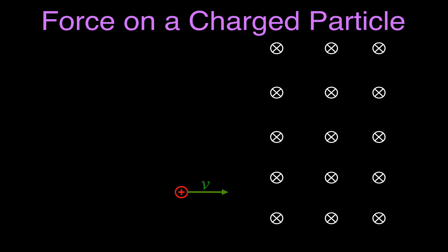We have a charged particle — a positively charged particle — moving with a certain velocity. Here is our magnetic field region. As you can see, the magnetic field is directed into the page; those X's and circles indicate the field is going into the page. Right now, outside the field region, there is no magnetic field.